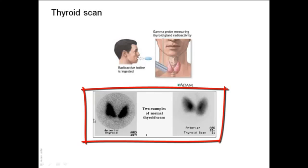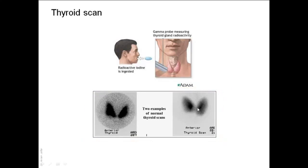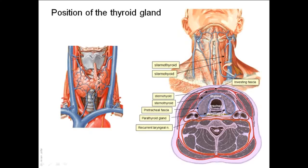This is a normal thyroid scan showing the two lobes of the thyroid connected by an isthmus. The thyroid gland lies in the anterior triangle of the neck — specifically in the muscular triangle — under cover of the sternohyoid and the sternothyroid muscles, which are part of the strap muscles of the neck.